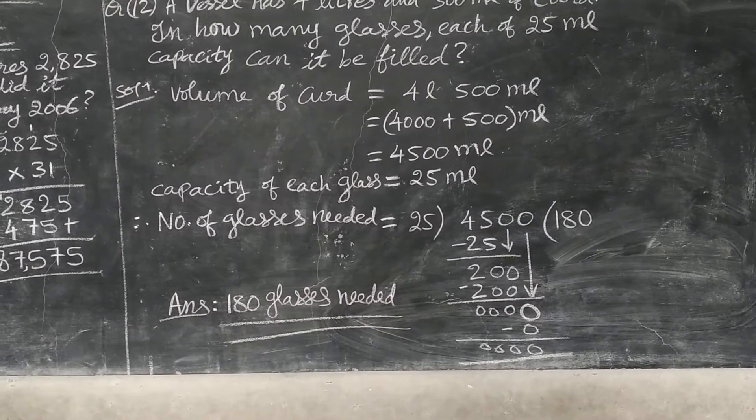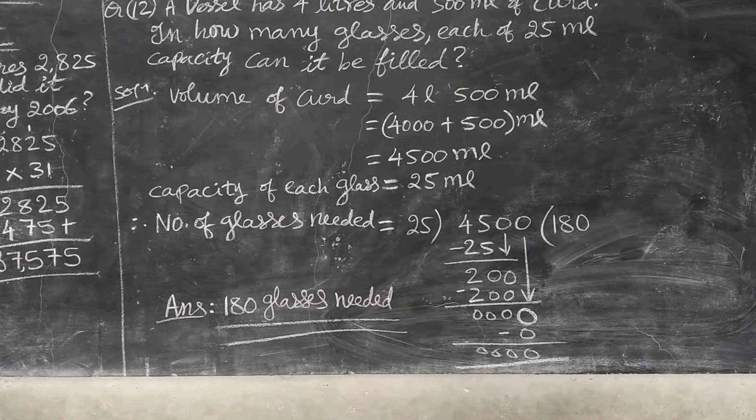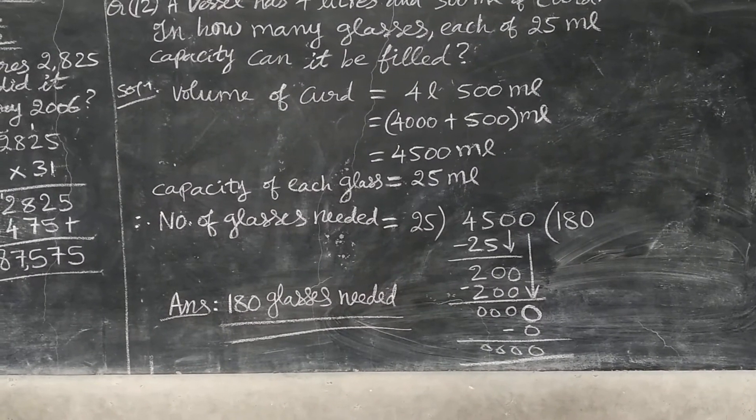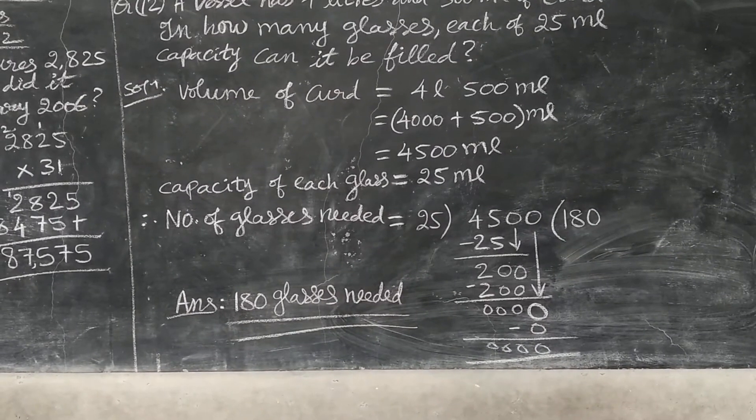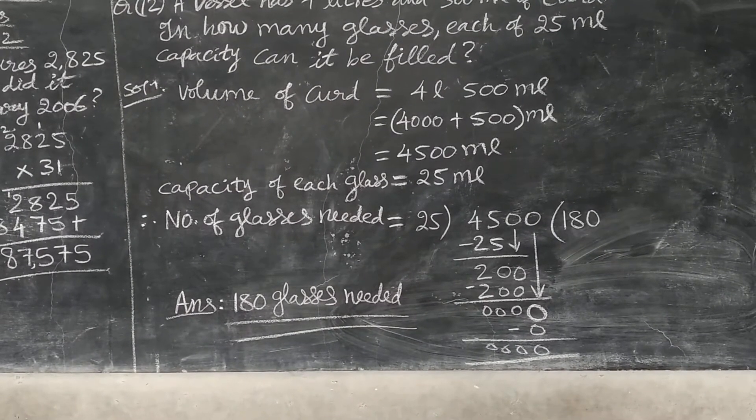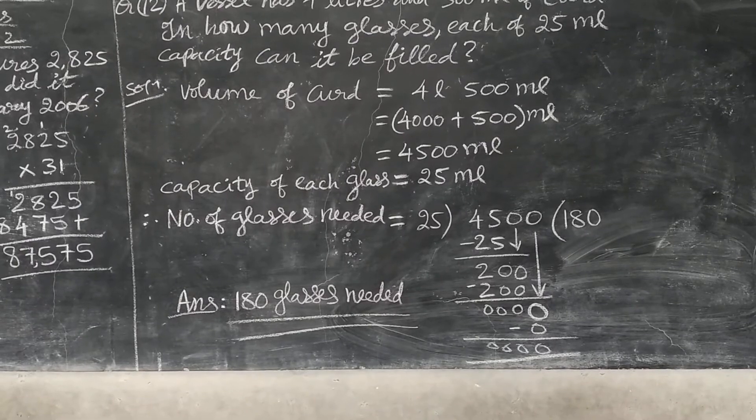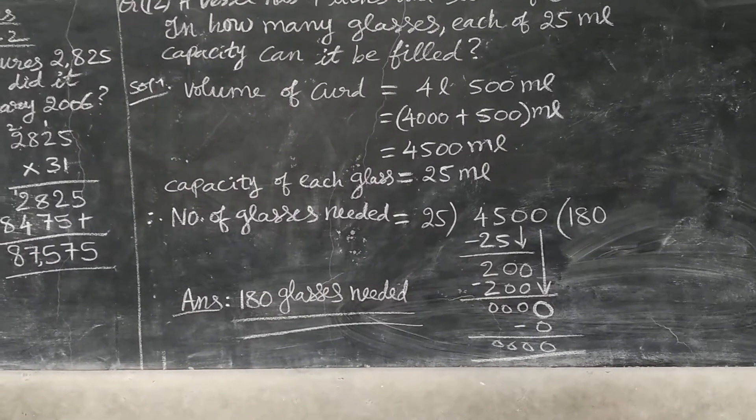So 200 minus 200, 0. One more 0 is there in the ones place. Bring down that 0. So 25 zeros are 0. Below I have written. 25 zeros are 0. 0 minus 0, 0. Quotient you see, 180.